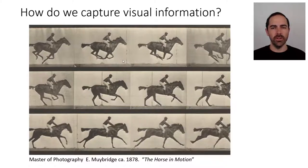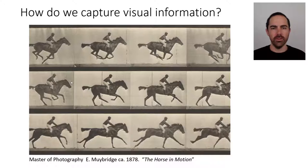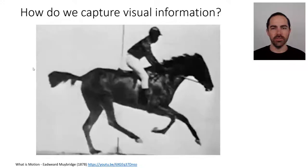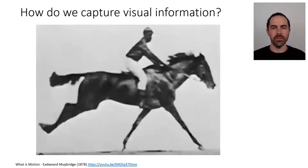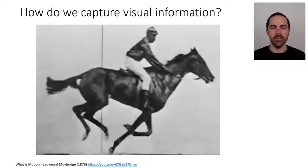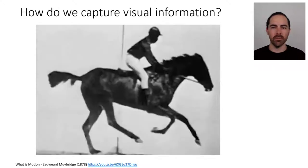What Muybridge invented was a triggering device that would capture one image after the other. He had multiple cameras and each camera would take a picture, all spaced in time with a clock. There was a trigger taking pictures with different cameras at different points in time, producing the different images you see on this slide. He not only invented a way to freeze time using these snapshots to create a sequence of images, but also invented a way to play them again. If you play this sequence of snapshots one after the other at a rate high enough, it gives the impression of motion.